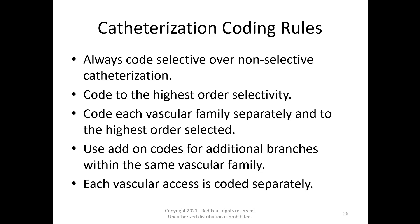The catheterization coding rules: you will always code selective over non-selective catheterization — non-selective catheterizations are bundled into the selective codes. You will code to the highest order of selectivity, which is why it's important to know the furthest point the catheter was moved. You will also code each vascular family separately, with one initial catheter placement code per family, coded to the highest order selected. Add-on codes apply for additional branches within the same vascular family.